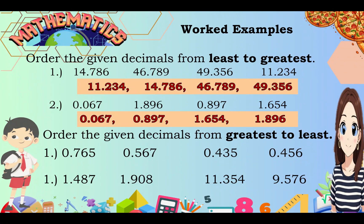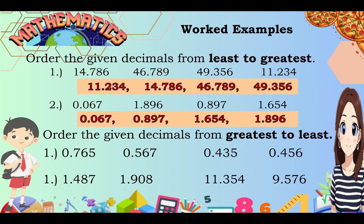Now let's order the given decimals from greatest to least. For the first set: 0 and 765 thousandths, 0 and 567 thousandths, 0 and 435 thousandths, and 0 and 456 thousandths. Looking at the tenths place, we have 7, 5, 4, and 4. So the greatest is 0 and 765 thousandths, followed by 0 and 567 thousandths. For the last two with the same 4 tenths, we compare the hundredths place: 3 is less than 5, so 0 and 435 thousandths is the least.